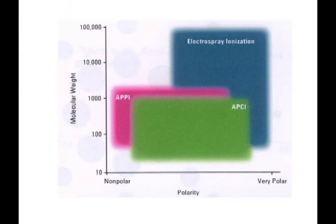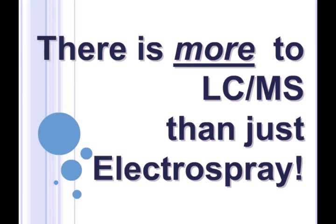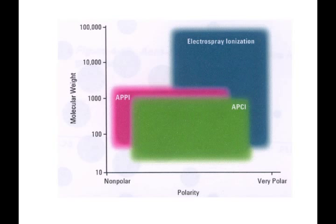We have three interfaces available in modern LC-MS. That is, electrospray, atmospheric pressure chemical ionization, and atmospheric pressure photo ionization. Our colleagues at Agilent Technologies came up with this chart a few years ago, and I think it's an excellent chart to begin the discussion of methods development and how we choose between these three types of interfaces.